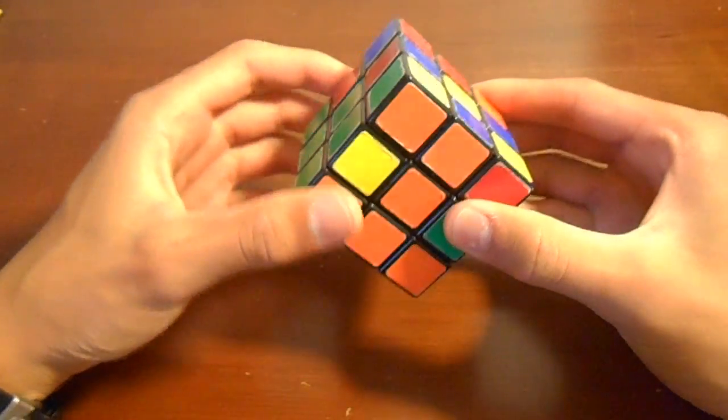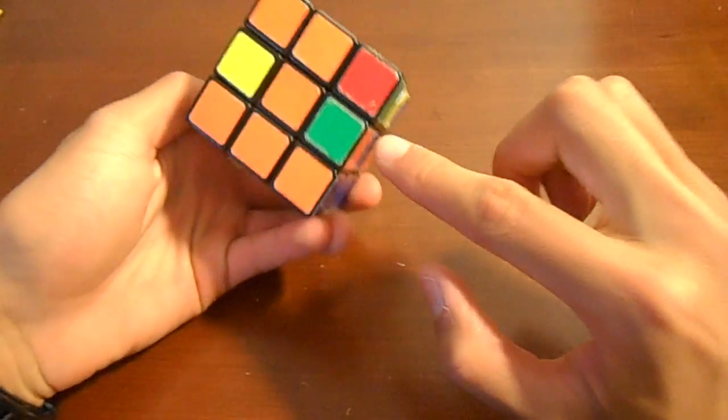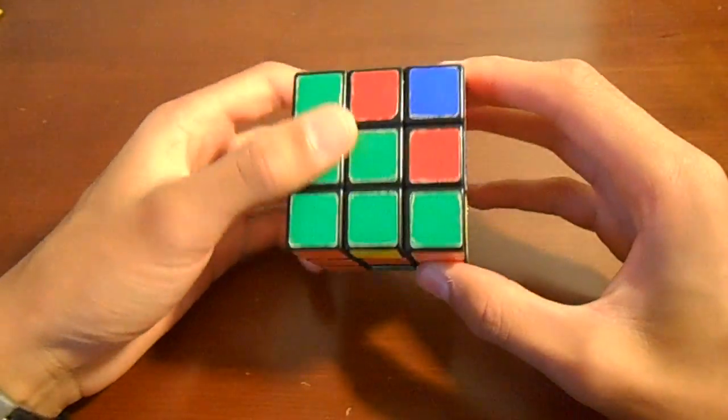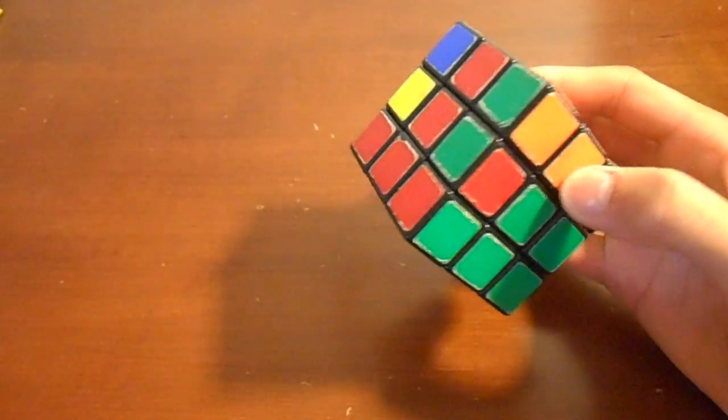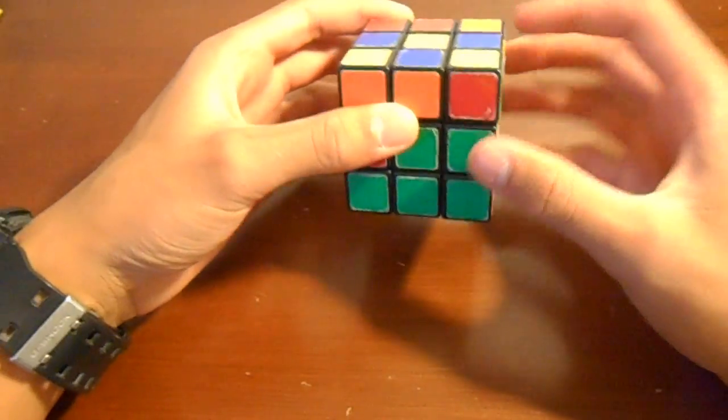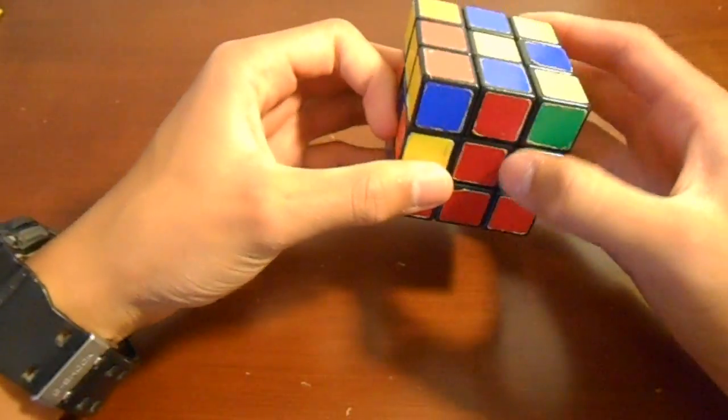So what we're going to do in this video is we are going to fill in these four slots to create, or to finish off the first two layers. And what we're going to do is we're going to find the four edge pieces and insert them.